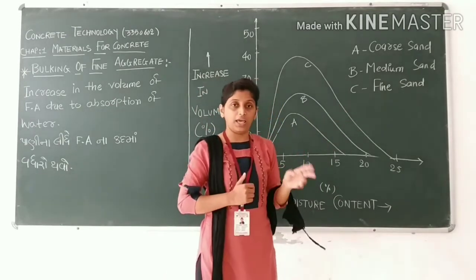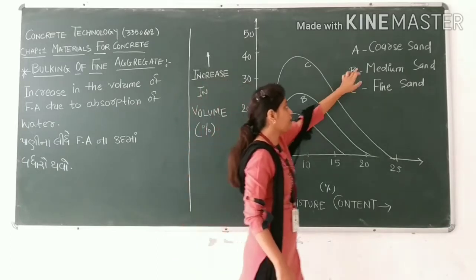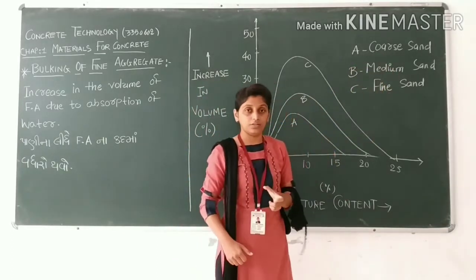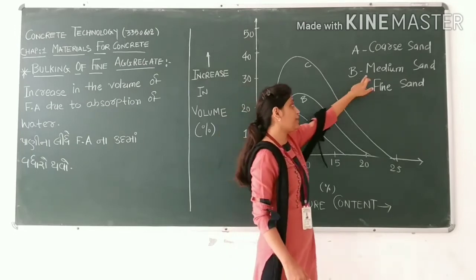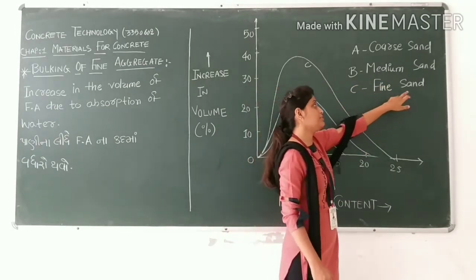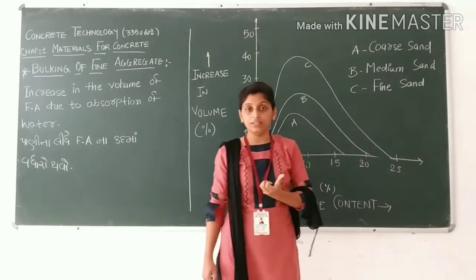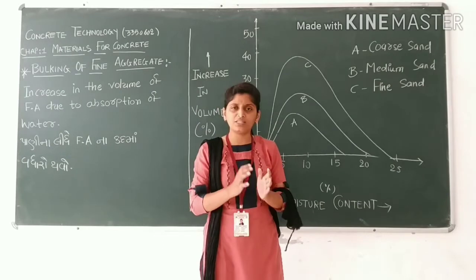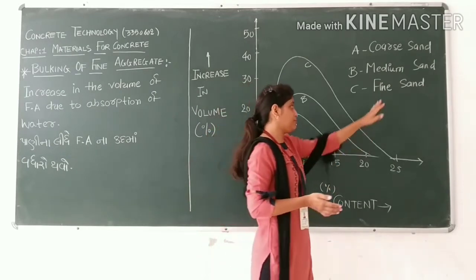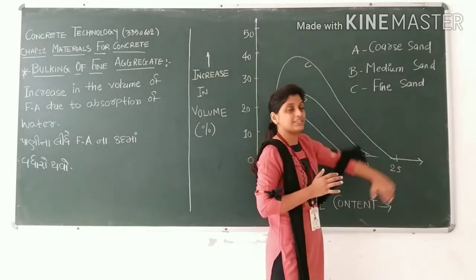Now, three curves A, B, and C, where A is coarse sand aggregate, B is medium sand aggregate, and C is fine sand aggregate. The coarse sand has larger particles in size, and the fine sand has smaller particles in size.